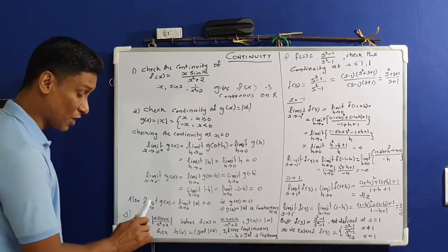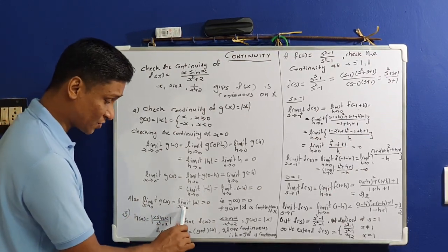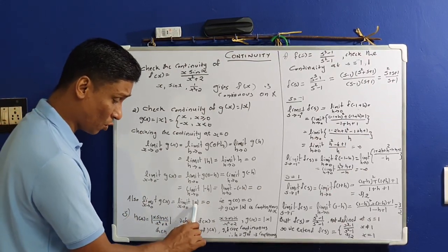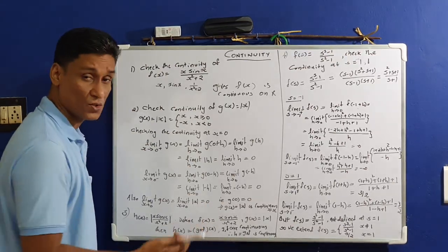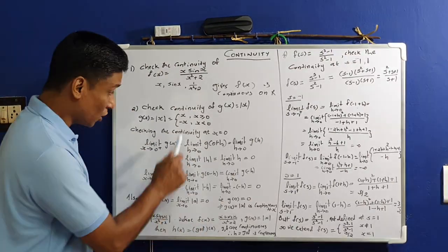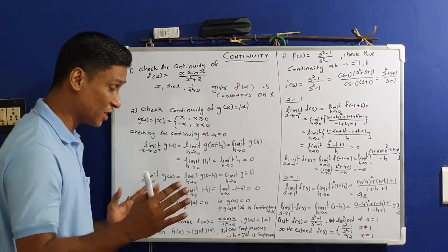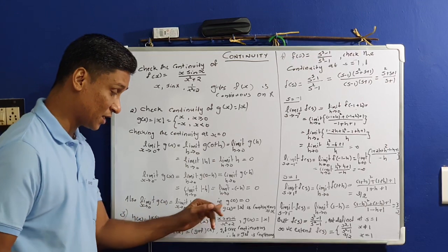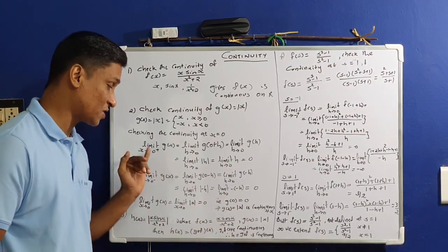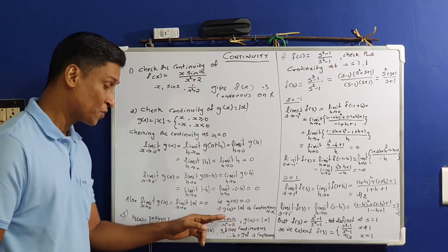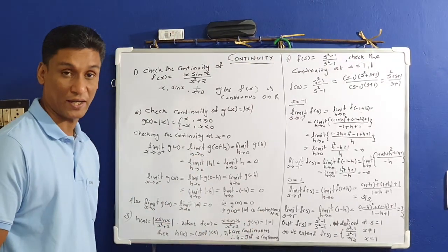Now the functional value: g(0) = |0| = 0. So left limit = 0, right limit = 0, and functional value = 0. All three are equal, therefore g(x) = |x| is continuous for all x.